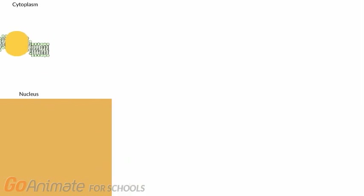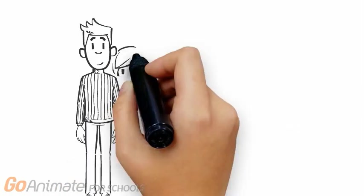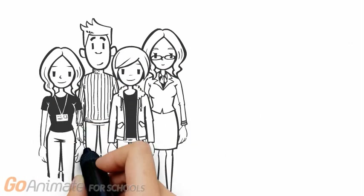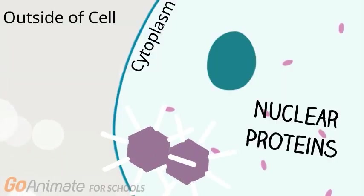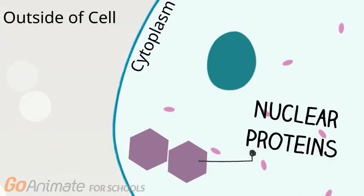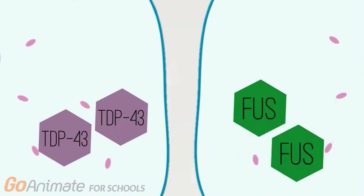So how is this all related to ALS? To be honest, scientists are not exactly sure. However, researchers have found that individuals with neurodegenerative diseases, including ALS, have clusters of nuclear proteins, such as TDP43 and FUS, in their cytoplasm.